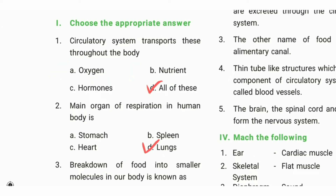First one: the circulatory system transports these throughout the body. The answer is option D, all of these. And second question: the main organ of respiration in the human body is blank. The answer is option D, lungs.